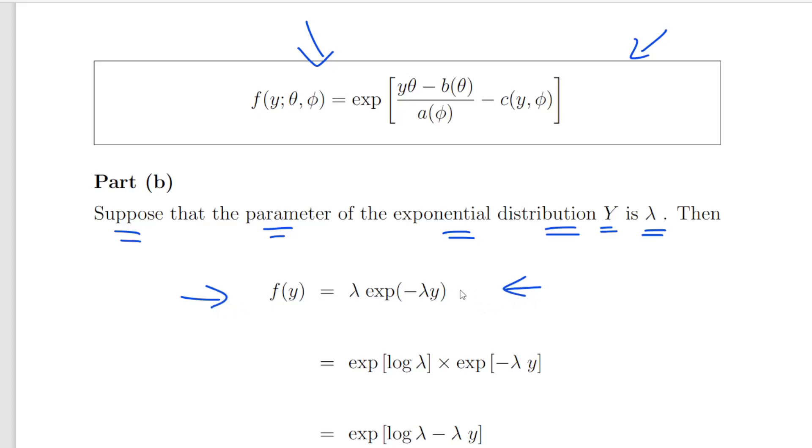Actually the probability density function is more complicated than that, but this is the core component: f of y equals lambda times the exponential of minus lambda times y. So what we're going to do is split that up into two parts. We have lambda there, so I'm going to re-express that as the exponential of log lambda and the other part, the exponential of minus lambda times y.